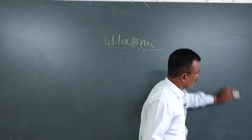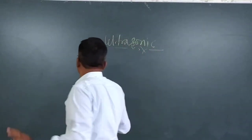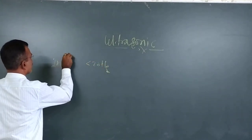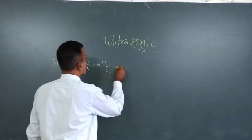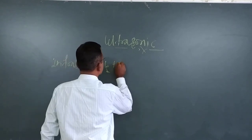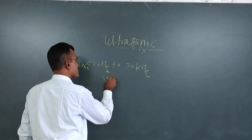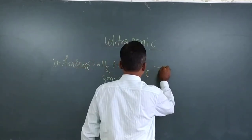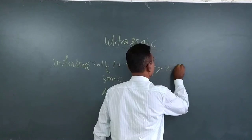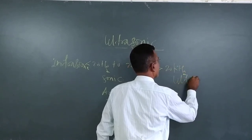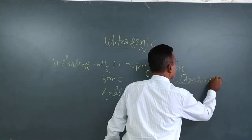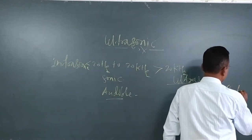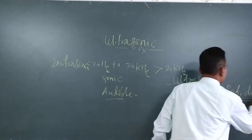We can divide the sound frequency spectrum: below 20 hertz is infrasonic; between 20 hertz to 20 kilohertz is sonic, that means the audible range; and above 20 kilohertz is ultrasonic. These ultrasonic waves are inaudible to human beings, but certain animals like bats or dogs can listen to them.